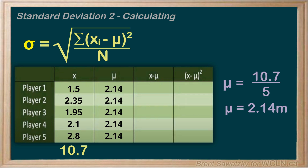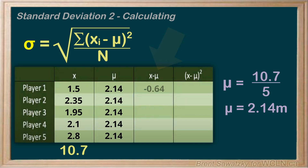Next, column three is column one minus column two for each point. For example, in row one we have 1.5 minus 2.14, which equals negative 0.64. We then do the same process for the second row and all through our data.